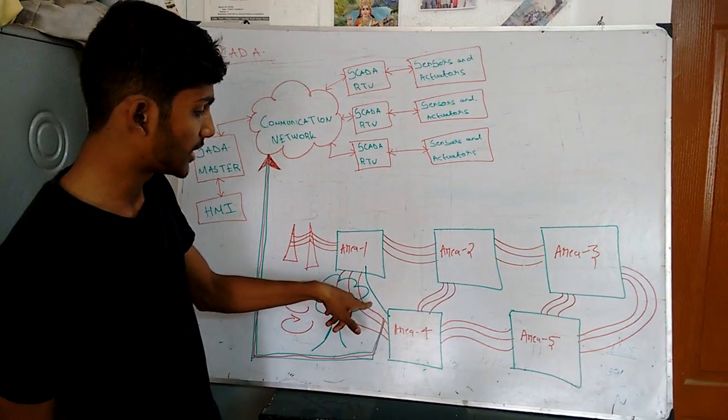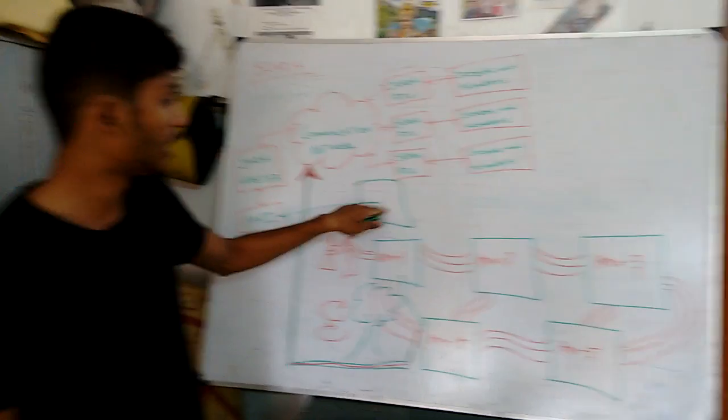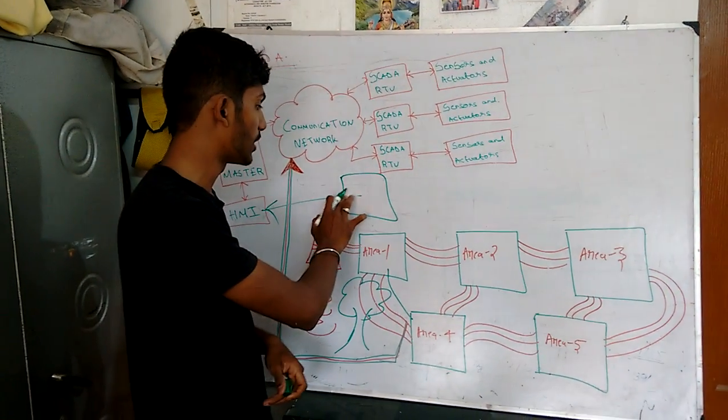The power cut will be shown on the human-machine interface display. The operators will see this and come to make the necessary changes.